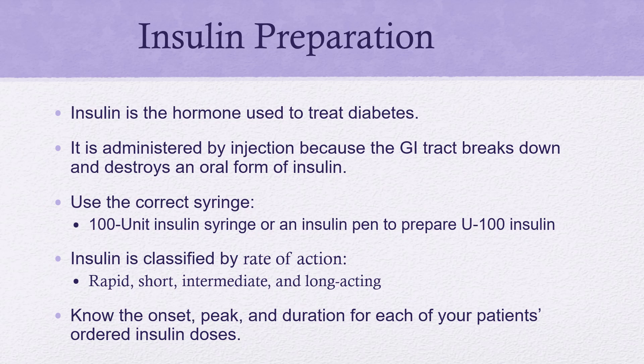An important thing to note about insulin is that it is measured in units. I will never draw up insulin in a syringe that measures milliliters. If your order is to give 3 units of insulin, that is a very small dose — if you inadvertently gave 3 mLs of insulin, that could cause your patient to go into a hypoglycemic crisis. All insulin syringes have an orange top as a reminder that it is for insulin only and measured in units, not milliliters.